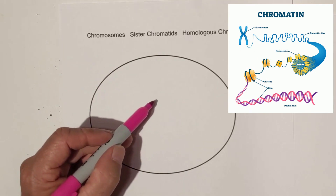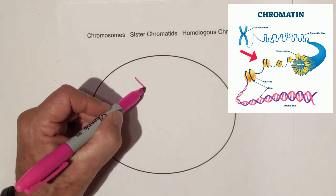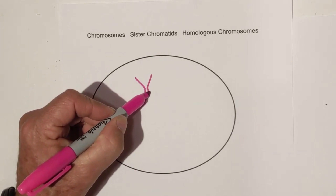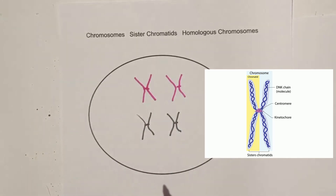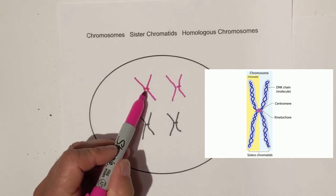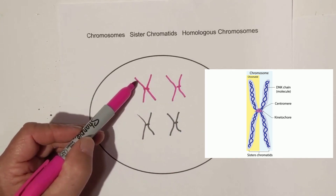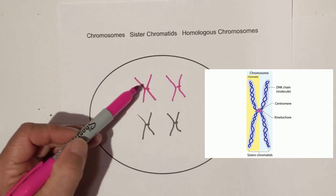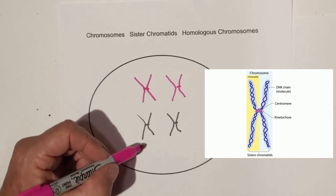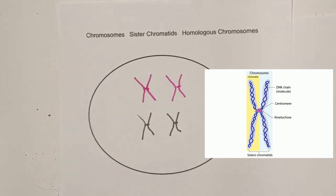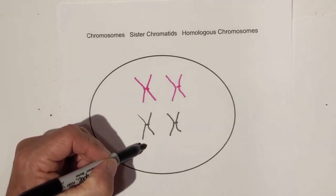During prophase, the strands that were drawn before begin to condense around the protein histone, and they begin to make this X-looking shape. The strands are connected with a centromere, and this whole thing is still called a chromosome. You have what are called sister chromatids.